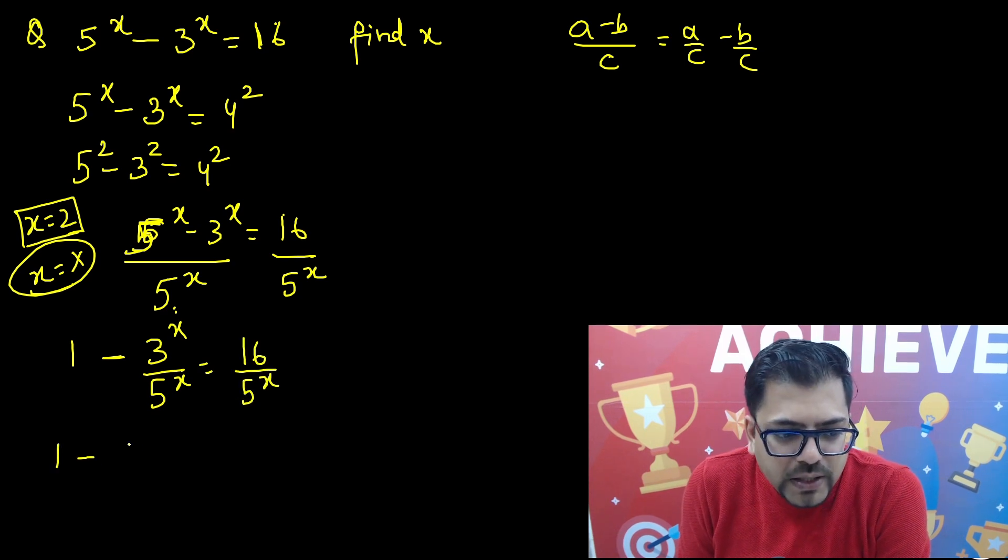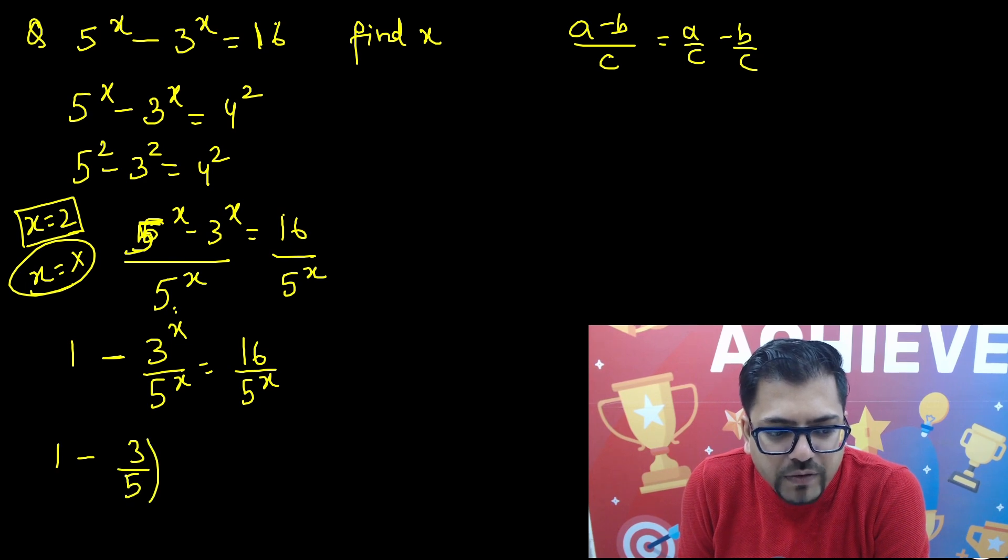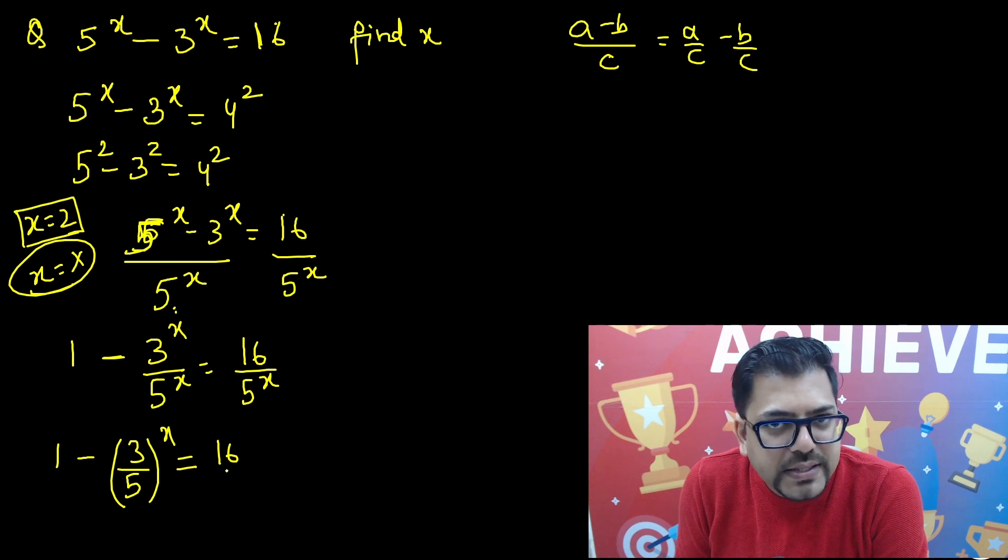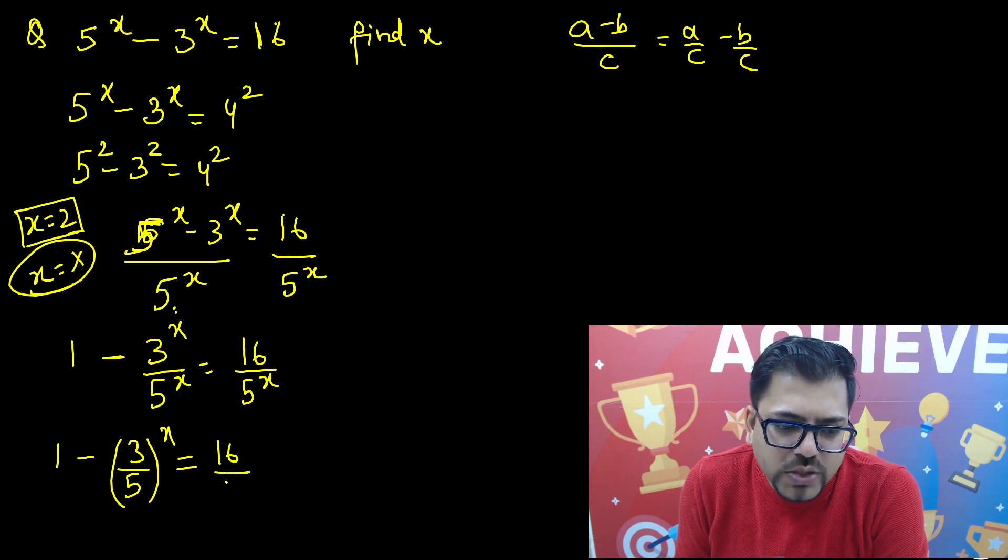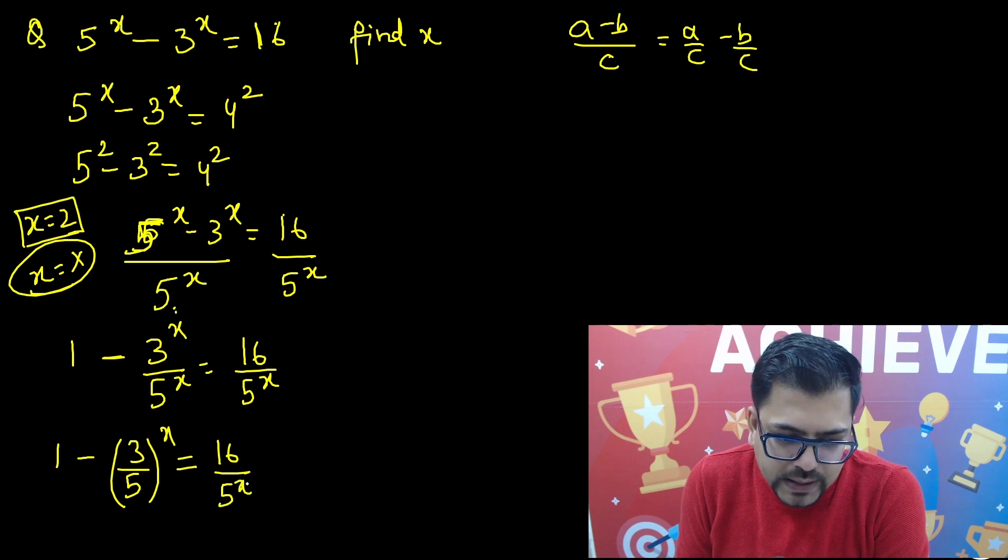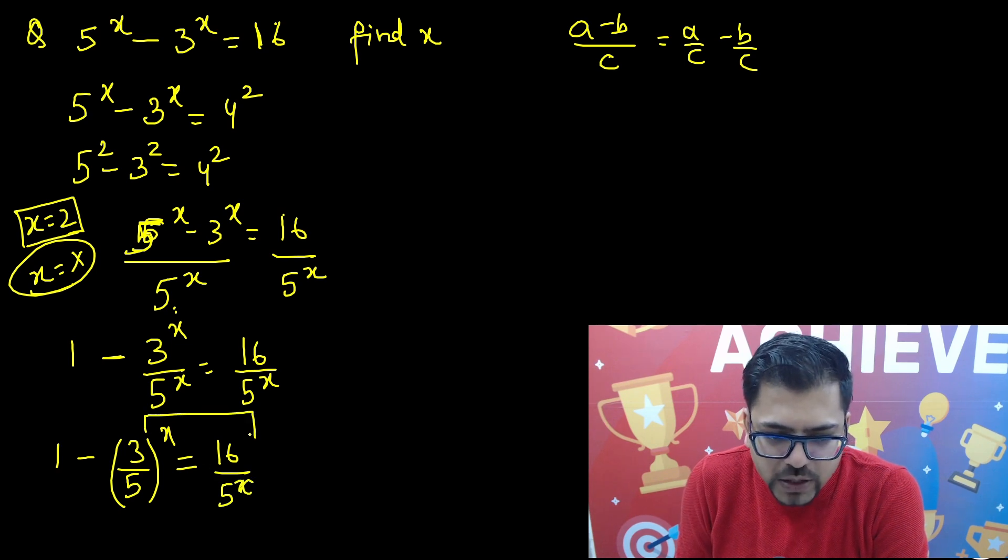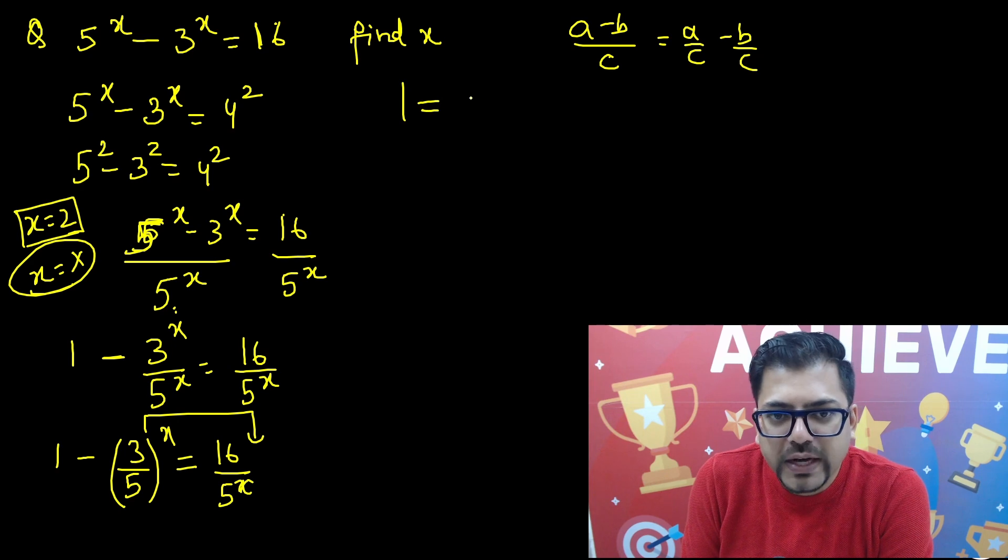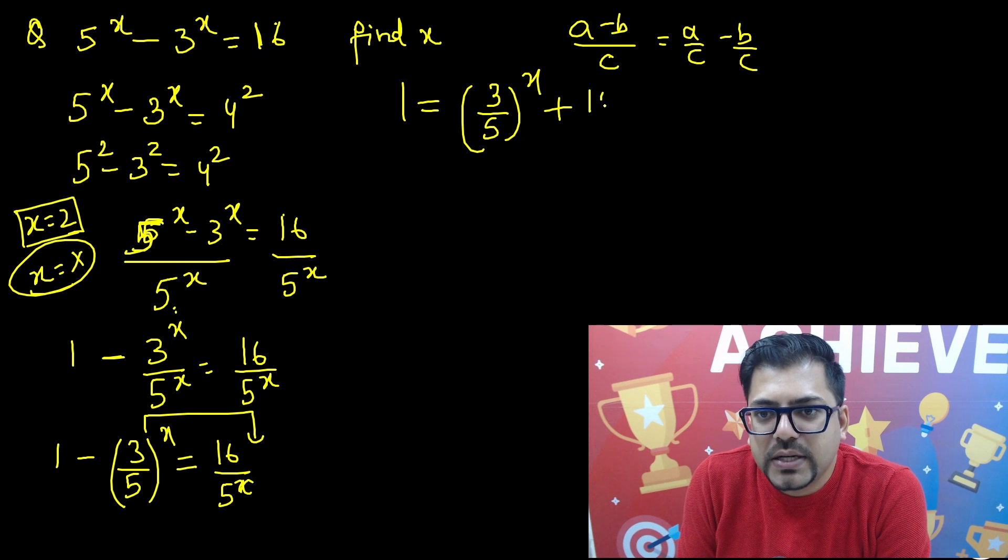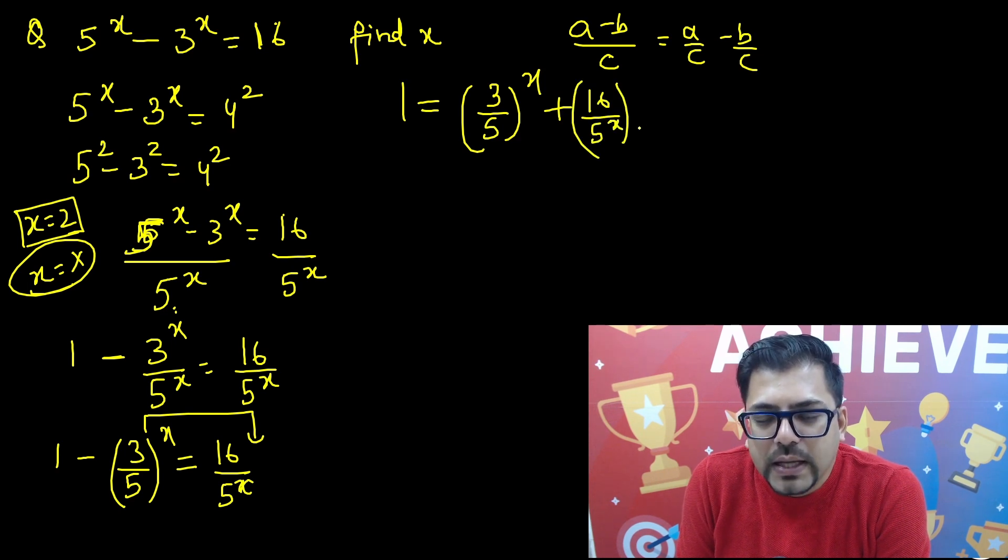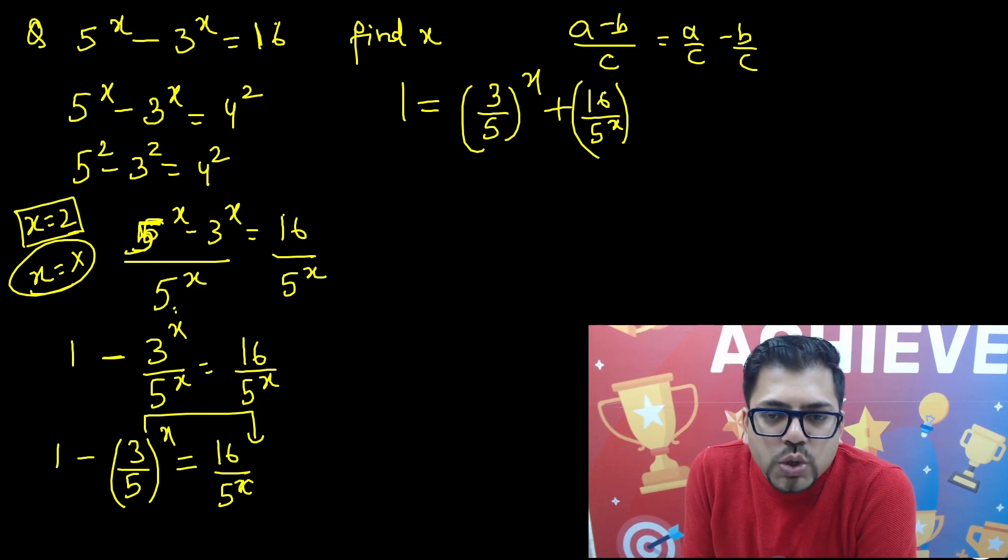So this is 1 minus (3/5)^x equals 16 upon 5^x. Now just send this negative part to this side. We will get 1 equals (3/5)^x plus 16 upon 5^x. Now if you see it carefully.